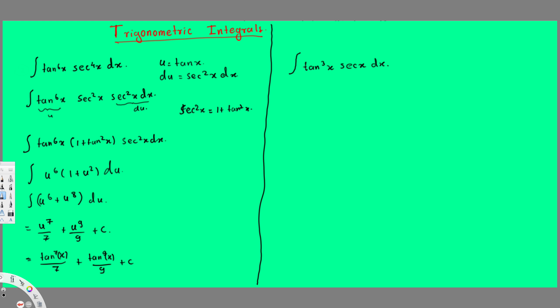The next problem is the integral of tan³x · sec x dx. In this case, I'll take u = sec x. The derivative of sec x is sec x · tan x, so du = sec x · tan x dx.